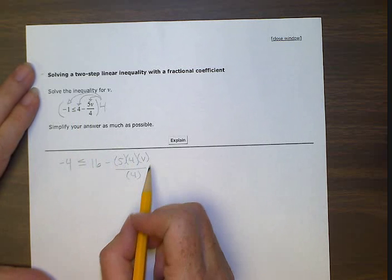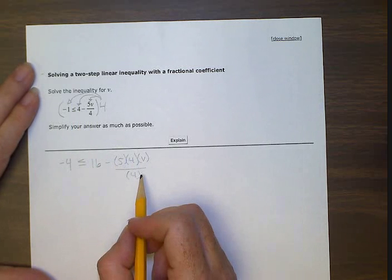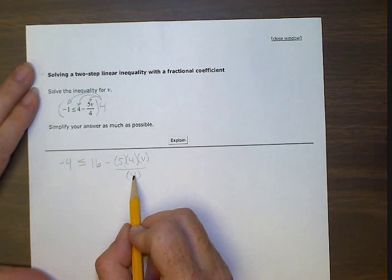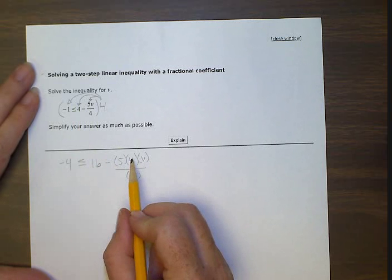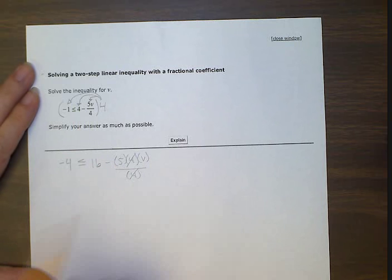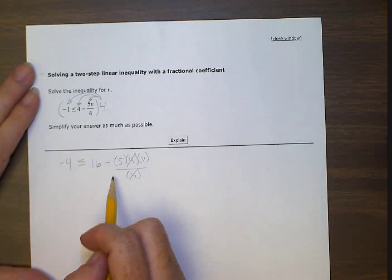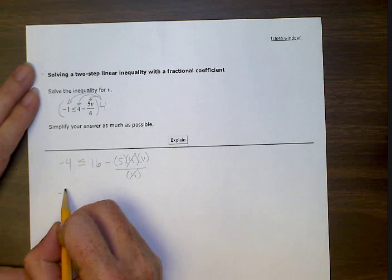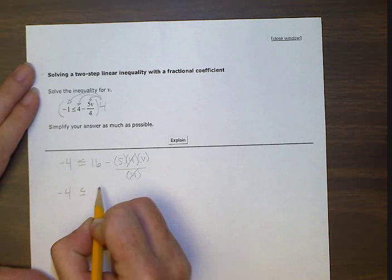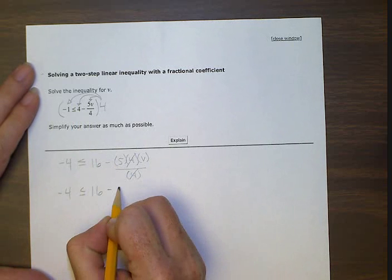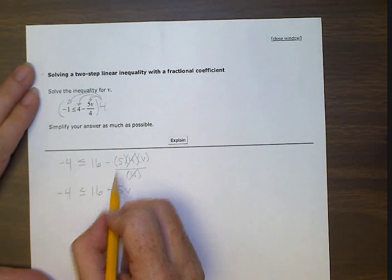So this is the point of why we multiplied everything by four. This four is going to reduce with this four. That will equal one. Right? Four divided by four equals one. And then we come up with this nice-looking inequality where we're just left with this minus five v right here.